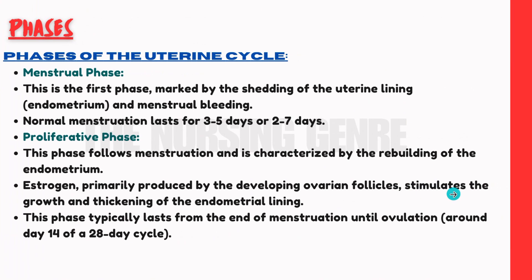Now we will cover the uterine cycle. The first phase is the menstrual phase. This is the first phase of the uterine cycle, marked by the shedding of the uterine lining. The endometrial layer, epithelial cells, and some blood discharge are shed out. This phase typically lasts 3 to 5 days, or 2 to 7 days.